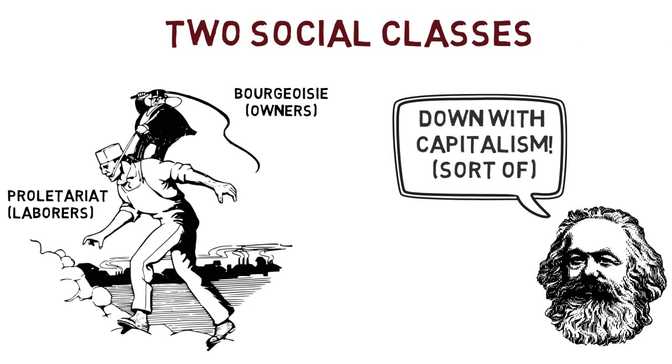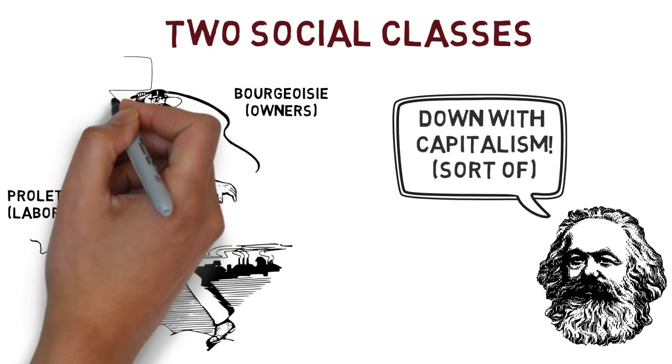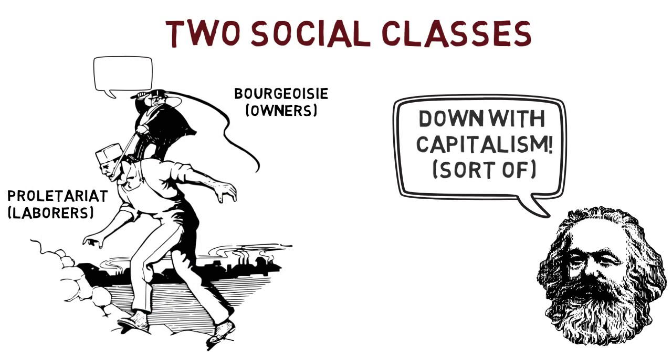Then there were the proletariat, also known as laborers. These were the people that typically did not have the resources to invest in mass production. The only thing they could sell was their labor.